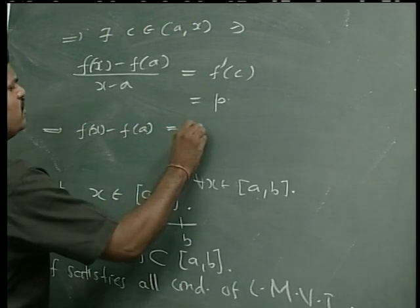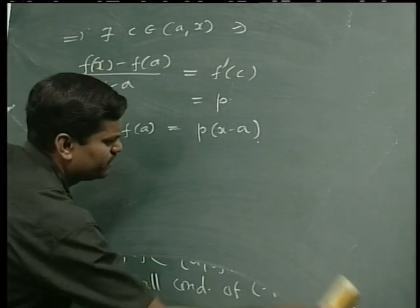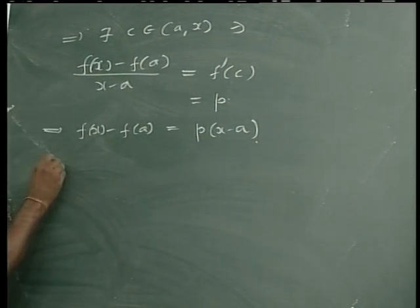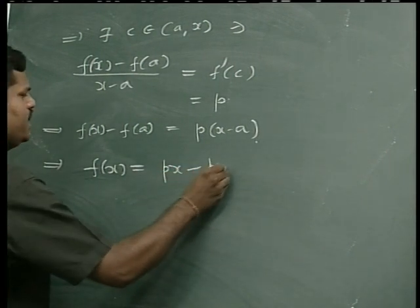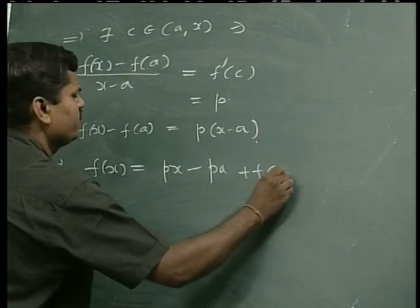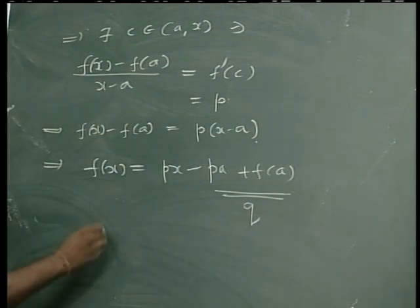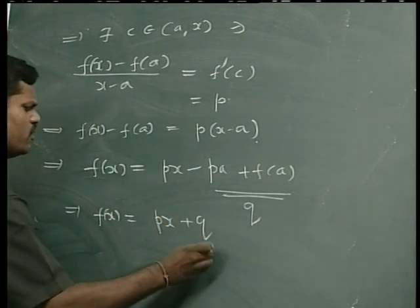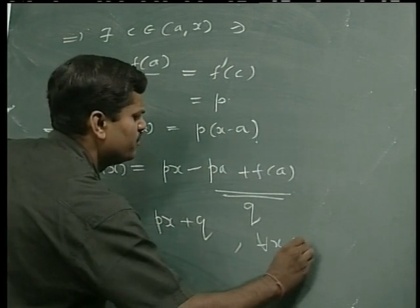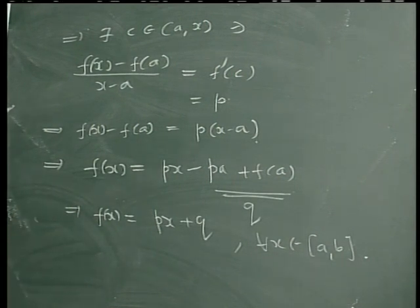So what I have proved is f(x) minus f(a) is equal to p times (x minus a). Taking x minus a to the right hand side, this proves that f(x) is equal to px minus pa plus f(a). As you notice, this is a constant — let us call this constant q. Therefore f(x) is equal to px plus q for every x in the closed interval [a, b].